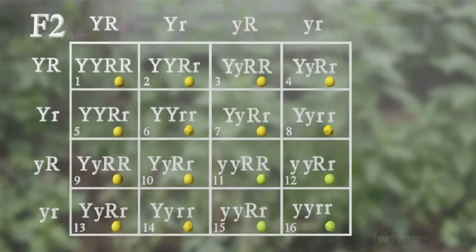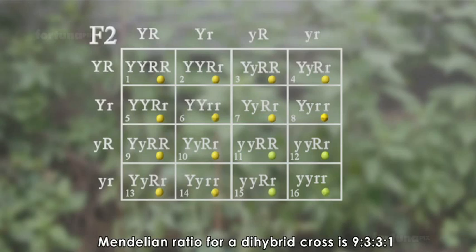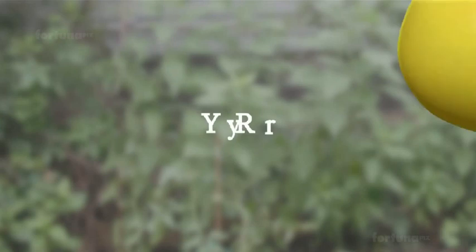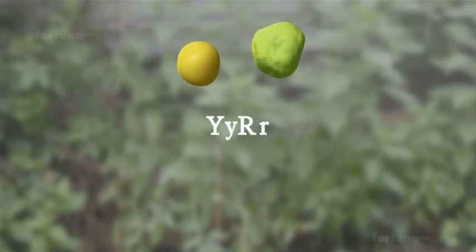Thus, the Mendelian ratio for a dihybrid cross is 9 to 3 to 3 to 1. From the results of the dihybrid cross experiment, Mendel theorized the law of independent assortment, which states that each pair of alleles will independently segregate during gamete formation.